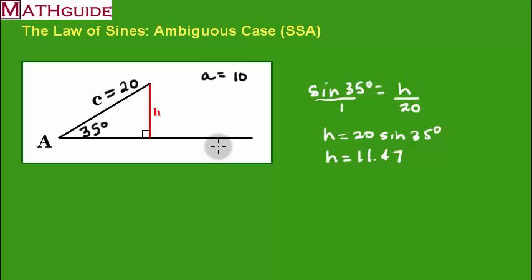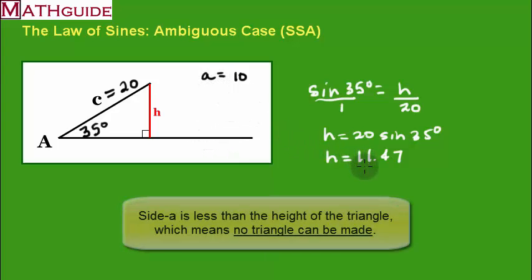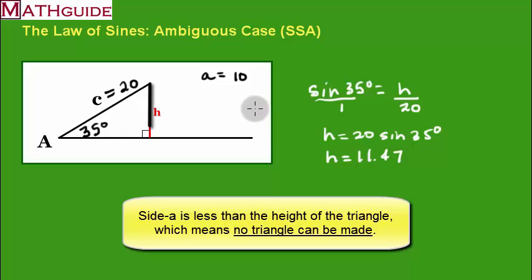Now you go through this logic. You say, well, is a at least as large as the height? And you go, no. So, it's impossible. It's impossible for side a to ever meet the opposite side of this triangle. It cannot form a triangle. There are zero possible triangles that we can make with this scenario. That's it. Let's go on to the next one.